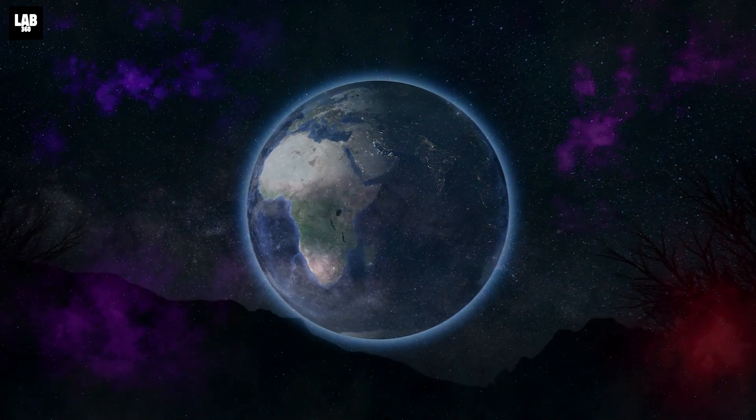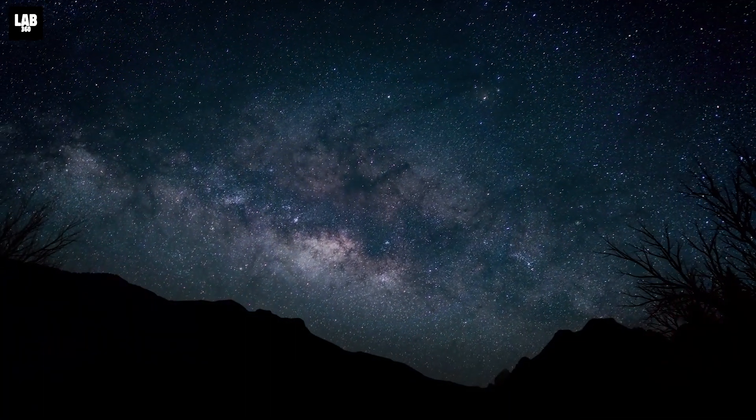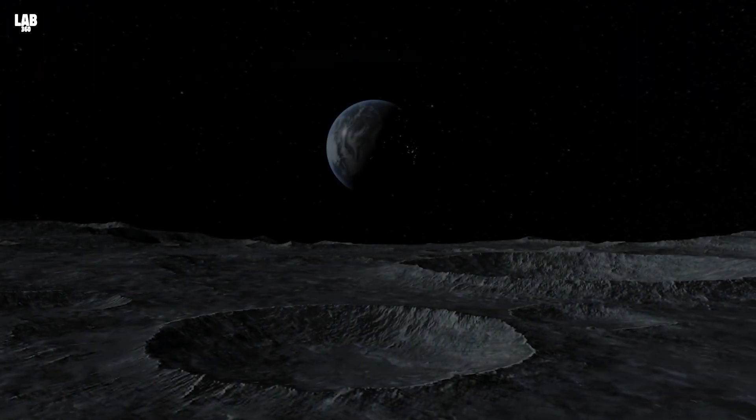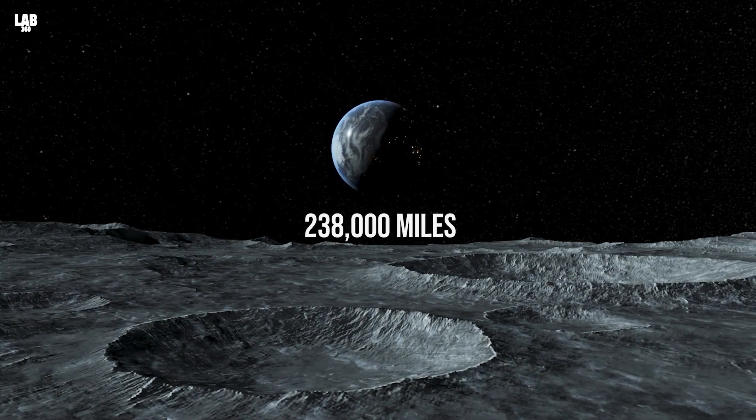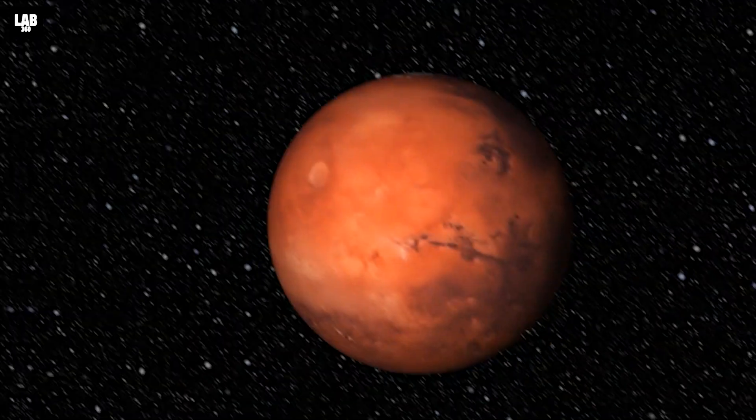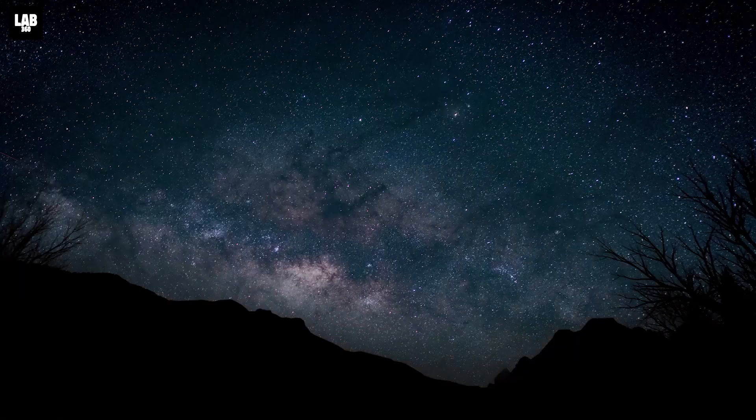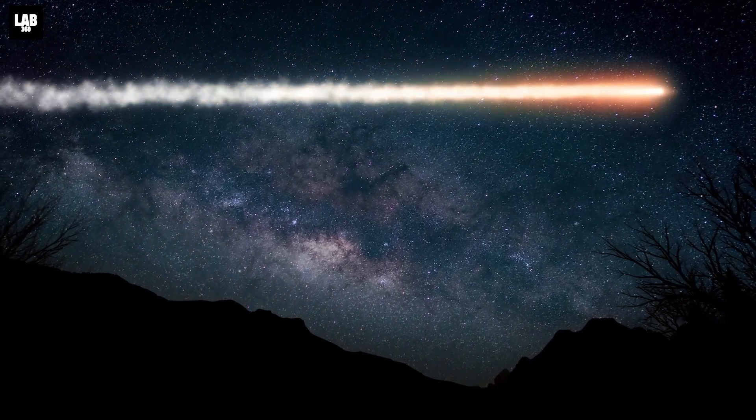While 2 million miles is certainly quite a distance, in astronomical terms, it's relatively small, with the Moon being an average 238,000 miles away from Earth and Mars being 140 million miles from Earth. So, you can say that it is a close shave.